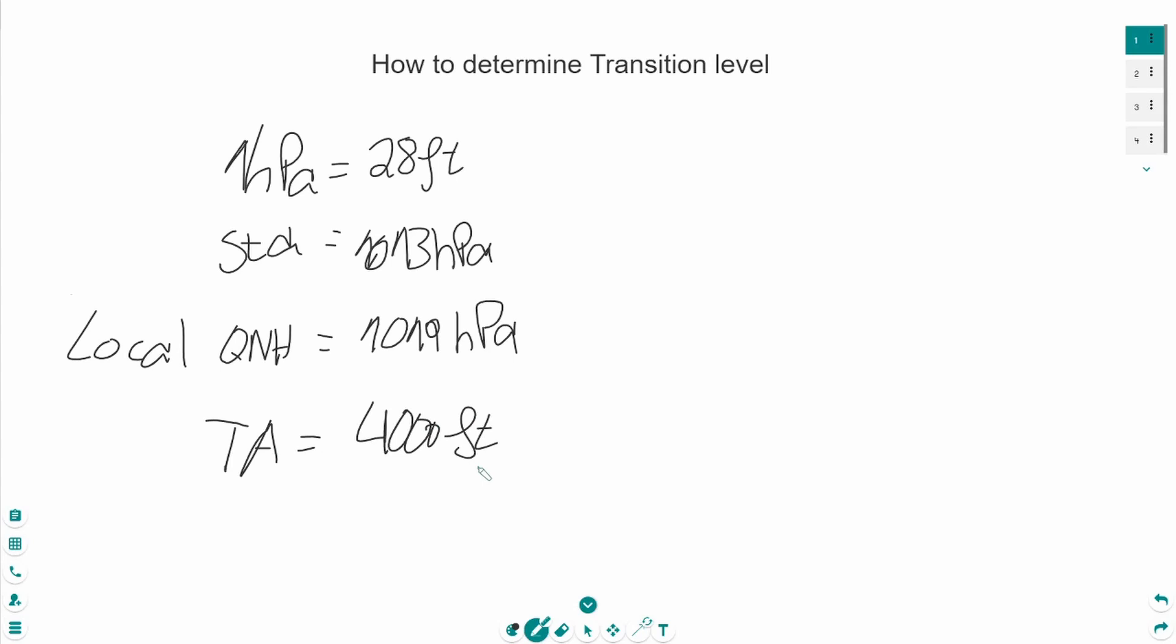We have now everything to begin with the calculation. The first step is to get the standard pressure and subtract it with the local QNH. In this case, 1013 hectopascal minus 1019 hectopascal.